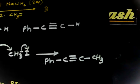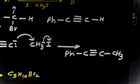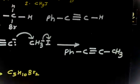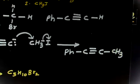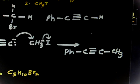This is a quite easy problem. You have to use 3 moles of NH2⁻ because in the first 2 steps it forms the alkyne, and in the last step it forms the acetylide ion, which then reacts with the alkyl halide.